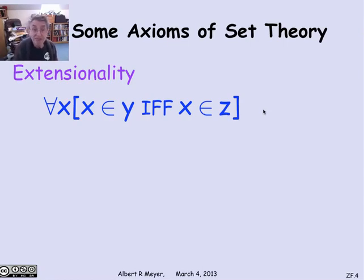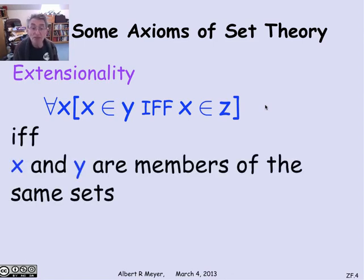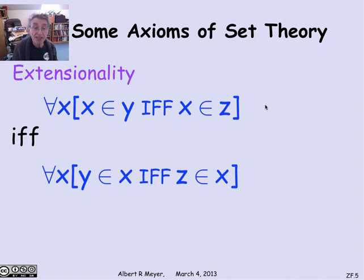But we don't really need to introduce equality as a basic part of the language and add axioms about how it behaves. There's one axiom that covers things adequately. If two sets have the same members, then they are members of the same sets. So if all the members of x and y are the same, then x and y are members of exactly the same things, which we could say this way: for every x, y is an x if and only if z is an x. That is one of the basic axioms of set theory.